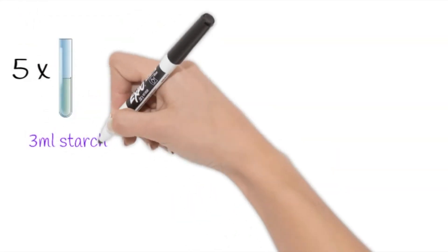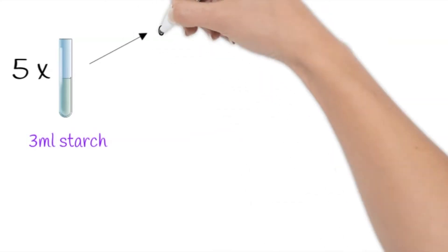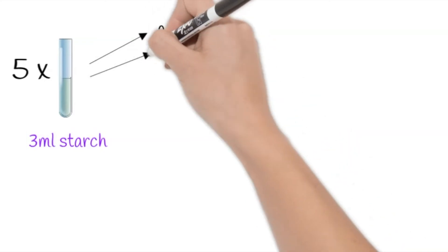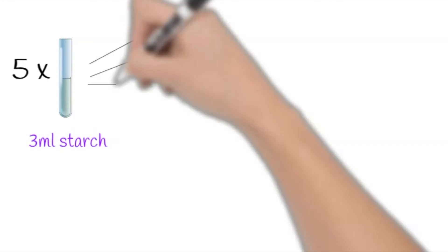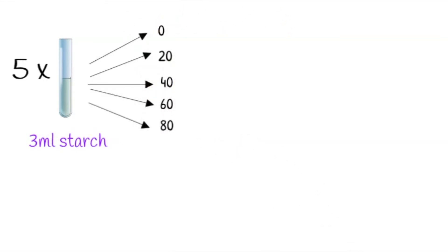In this experiment we'll be setting up five different test tubes of three millilitres of starch suspension. One will be placed into an ice bath to bring the temperature to approximately zero degrees C. One will be kept at room temperature at 20 degrees C, and the other three will be put into water baths at 40 degrees C, 60 degrees C, and 80 degrees C respectively.